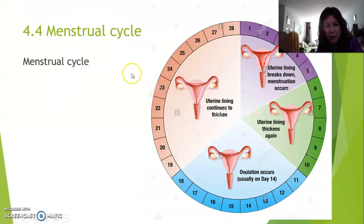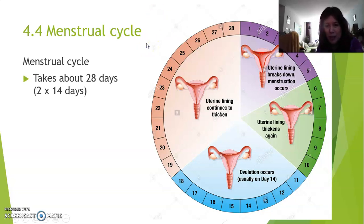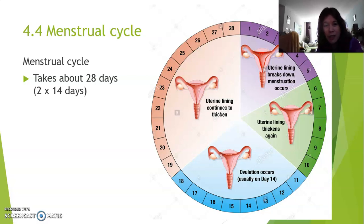I'm going to first give you a rough overview of the menstrual cycle and then go into the details. Here you can see a circle with all the days — 28 days. That's how long a menstrual cycle takes, and it's an average because some girls have a longer and some girls have a shorter menstrual cycle.